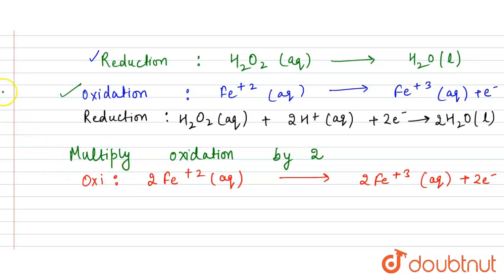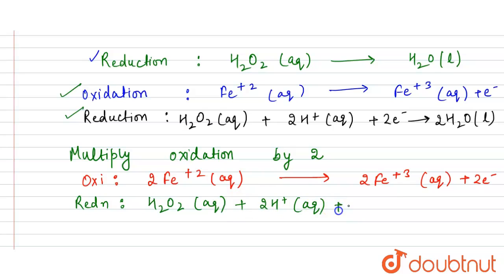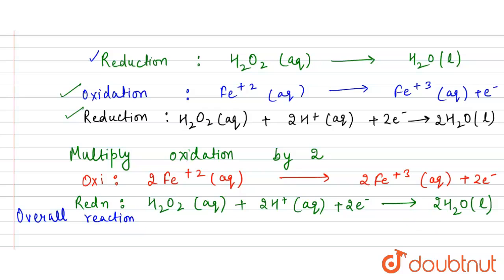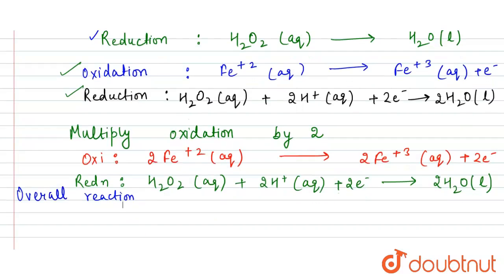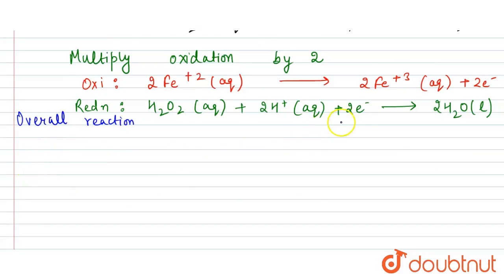We already have the reduction half-reaction: H₂O₂ (aq) + 2H⁺ (aq) + 2e⁻ → 2H₂O (l). The number of electrons is now equalized, so we can add the two half-reactions to get the overall reaction.